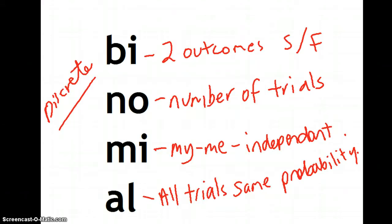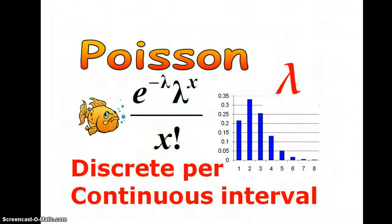Your binomial, the bi means your two outcomes, the success or failure. The no for the number of trials, that's a set number of trials. The mi, independence, the independent trials. And all for all trials have the same probability. The number of trials is discrete, the outcomes is discrete.